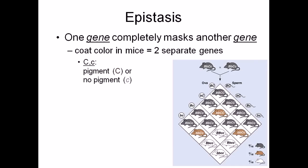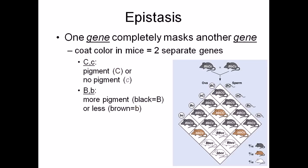Capital C means pigment is present, and small C means no pigment is present. Capital B means more pigment which is black, and small B means less pigment which is brown. So capital B means black and small B means brown.